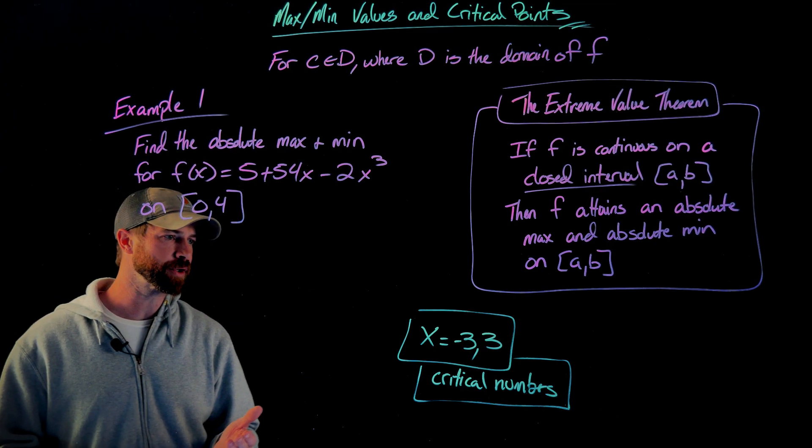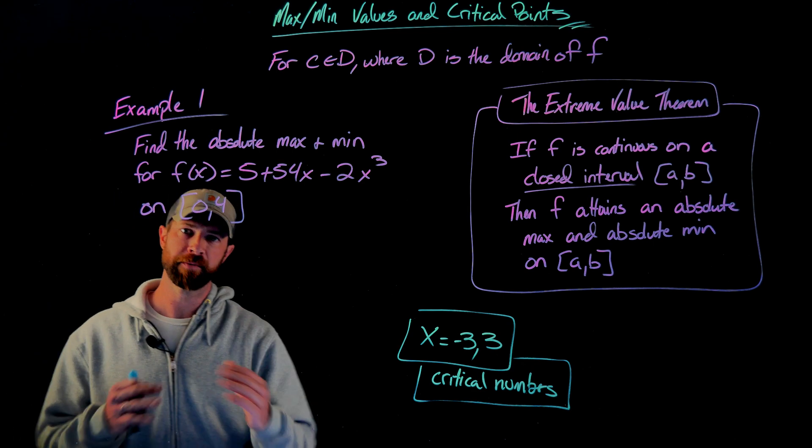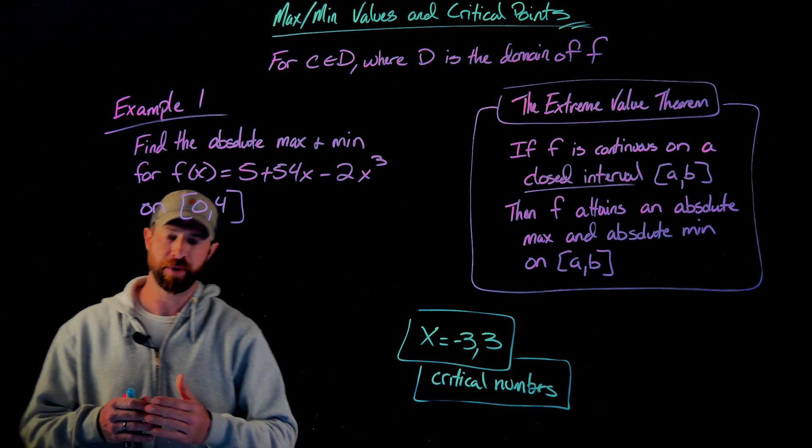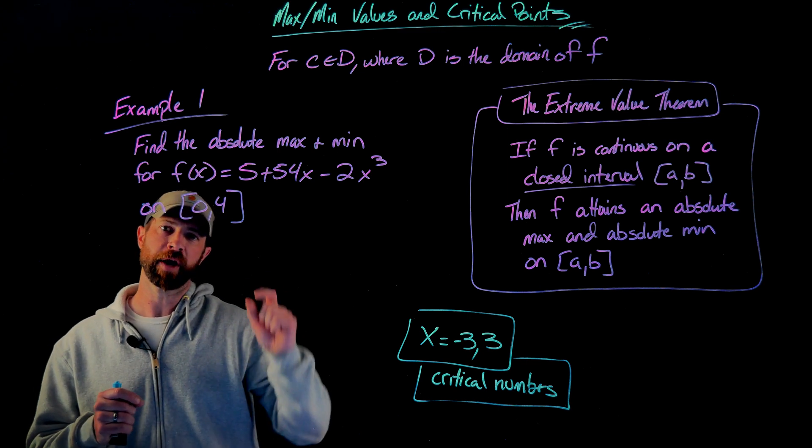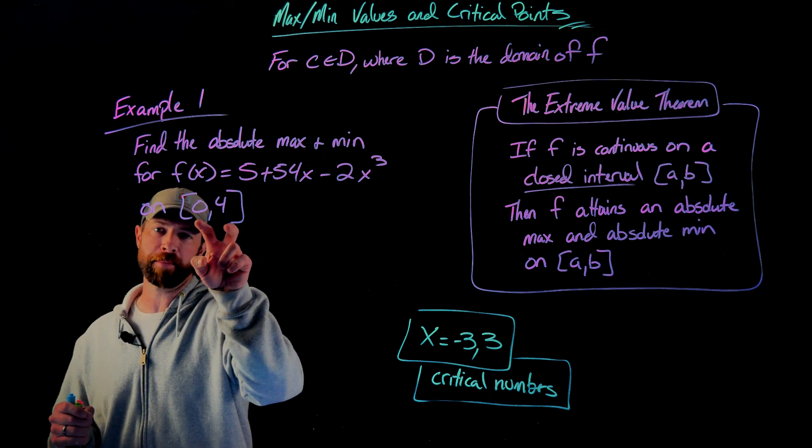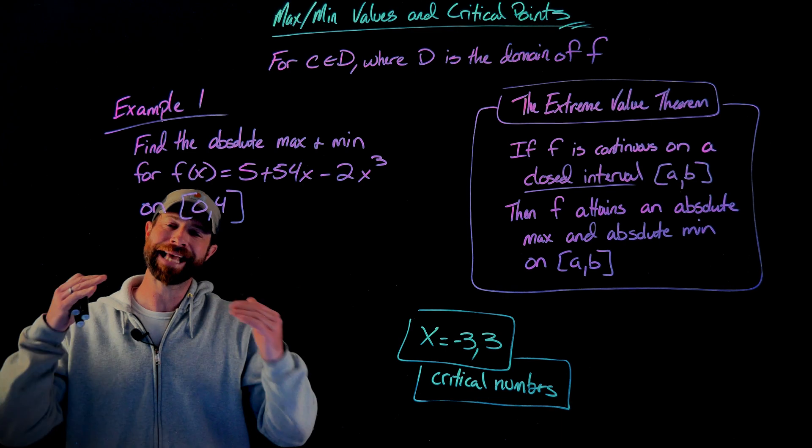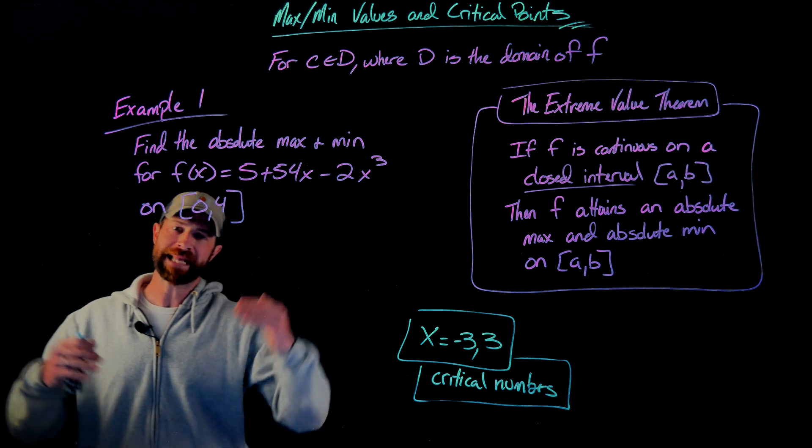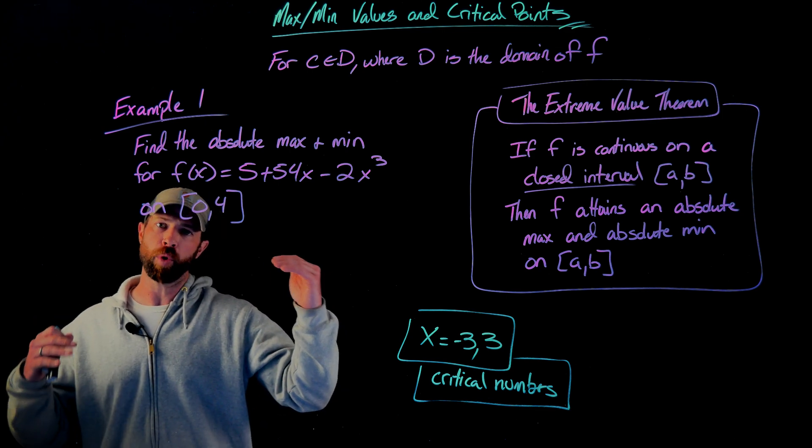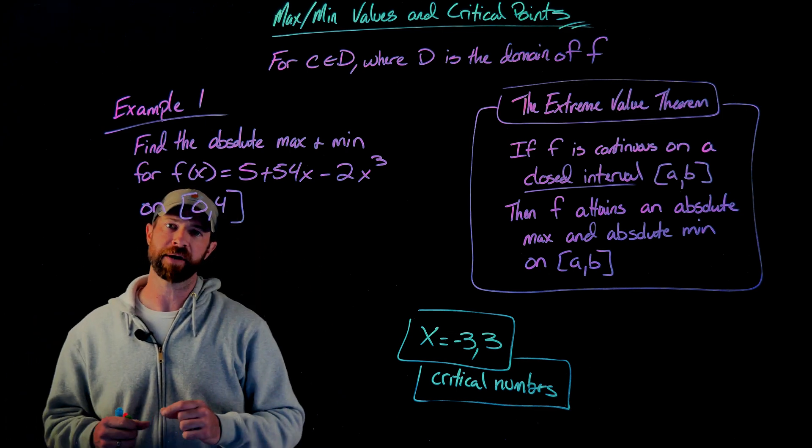I've defined my critical numbers. Now I'm going to find those critical numbers that land on my interval and compare those to the endpoints. My absolute max and absolute min are either going to occur at the endpoints on those intervals or at one of my critical number values.